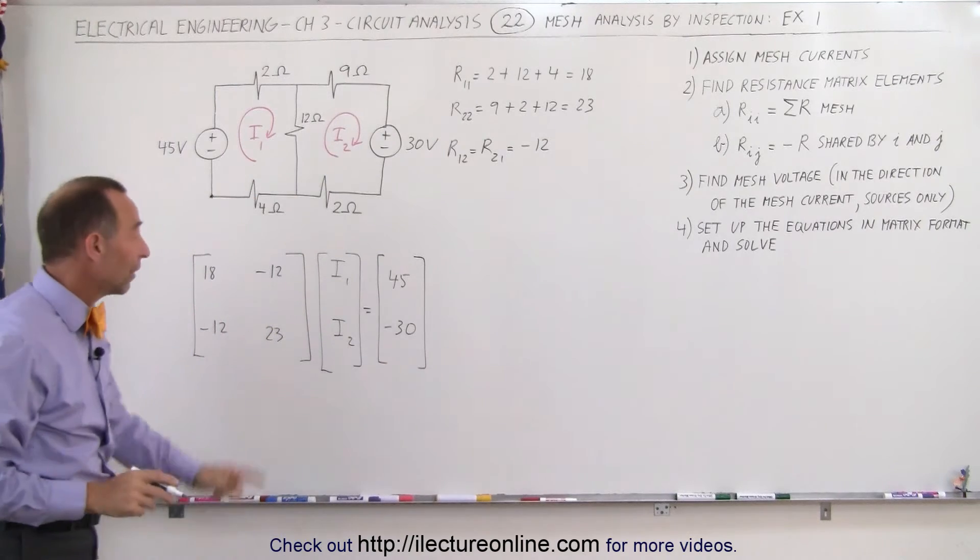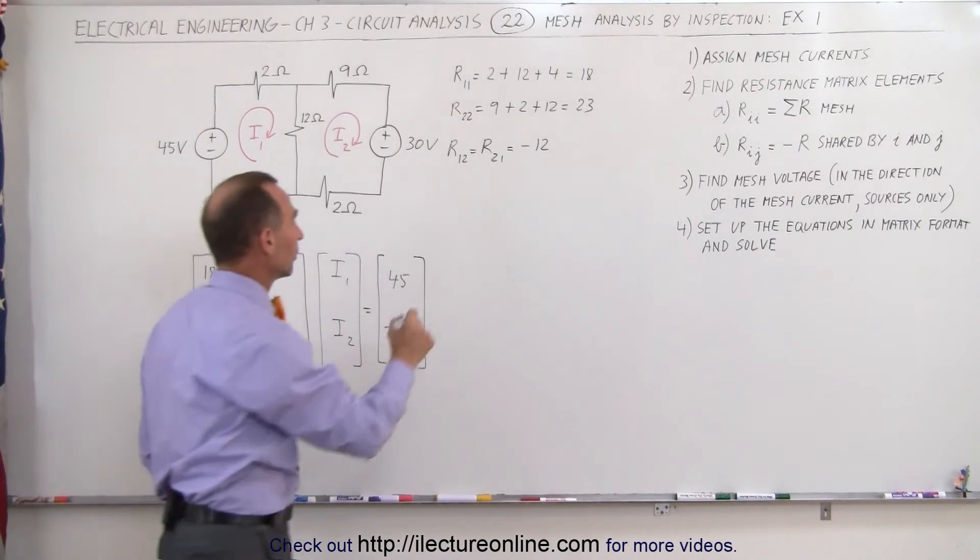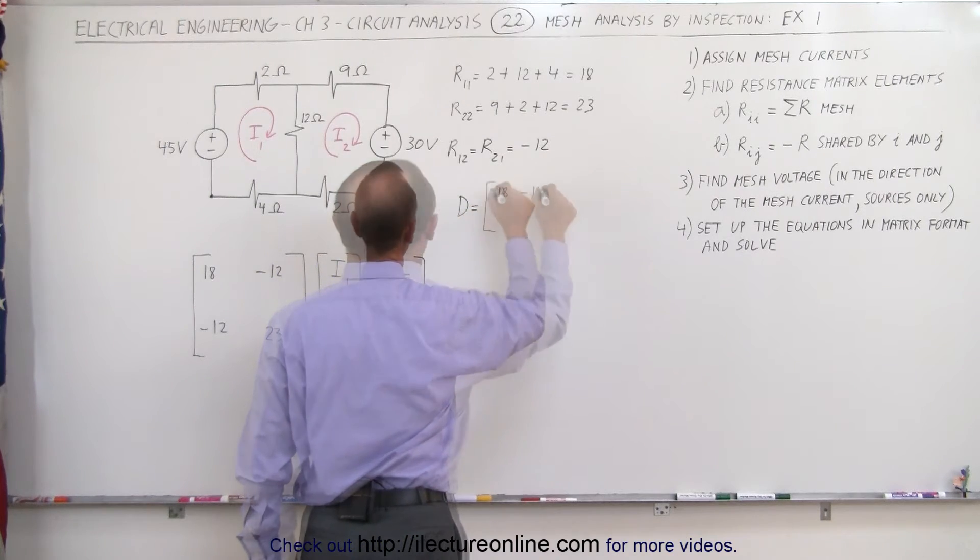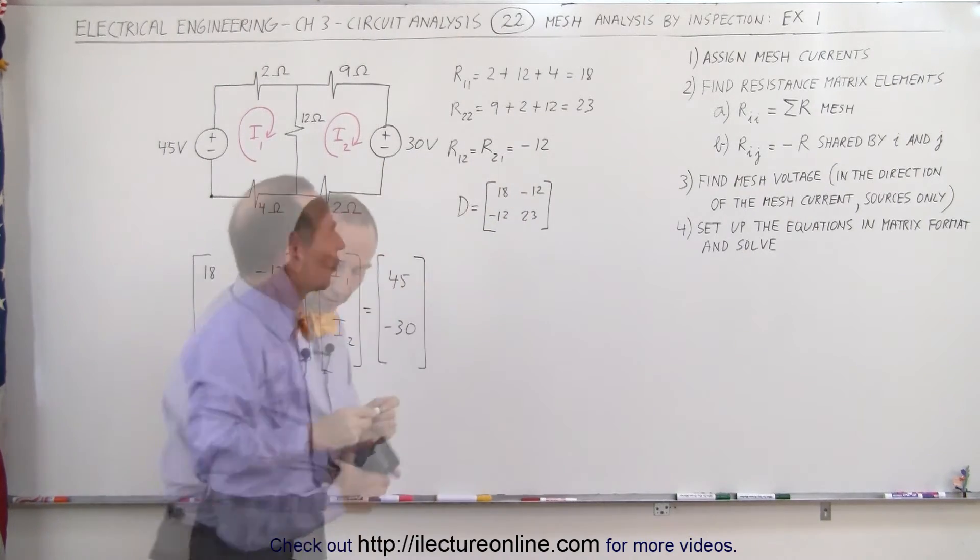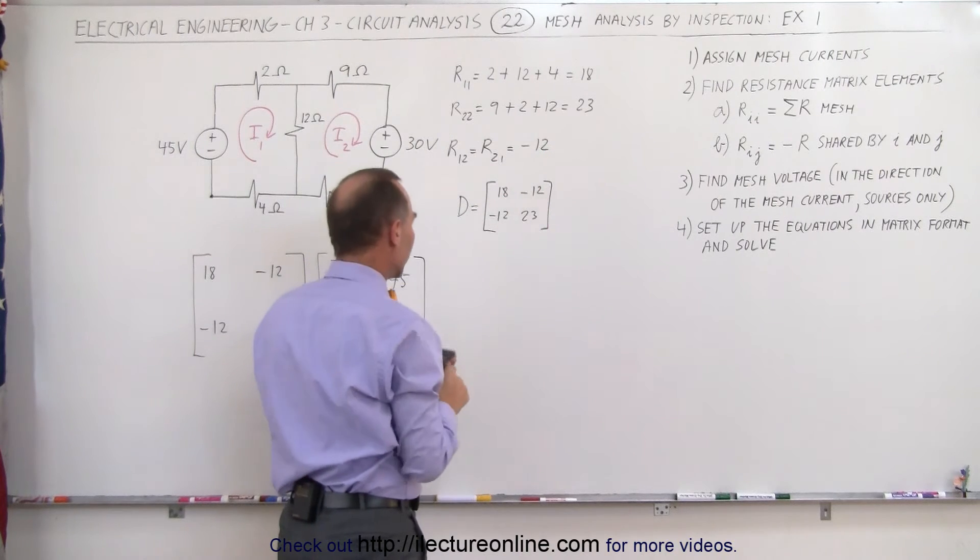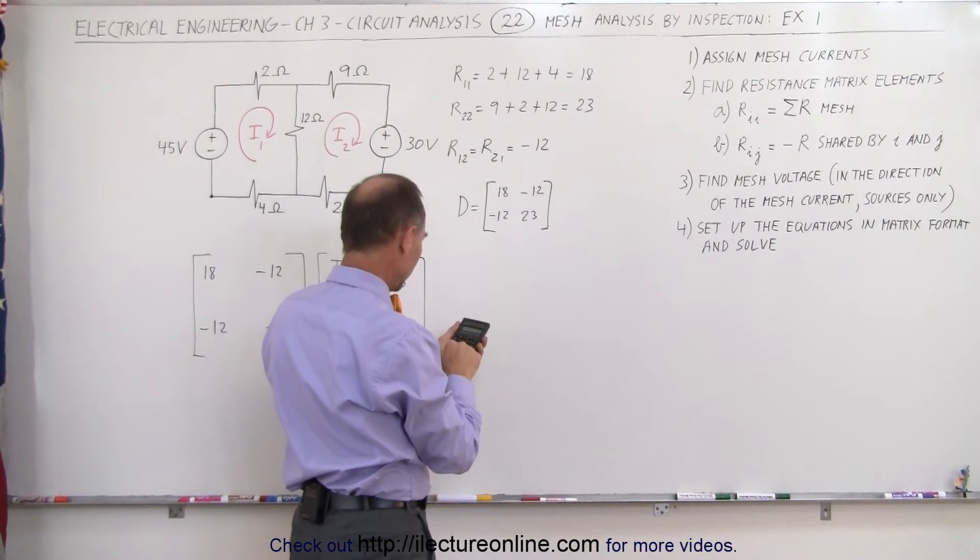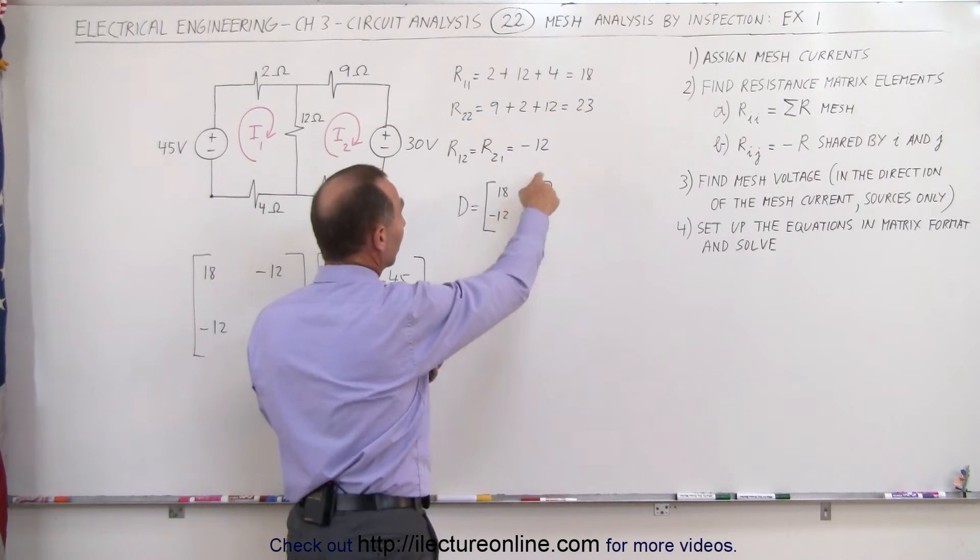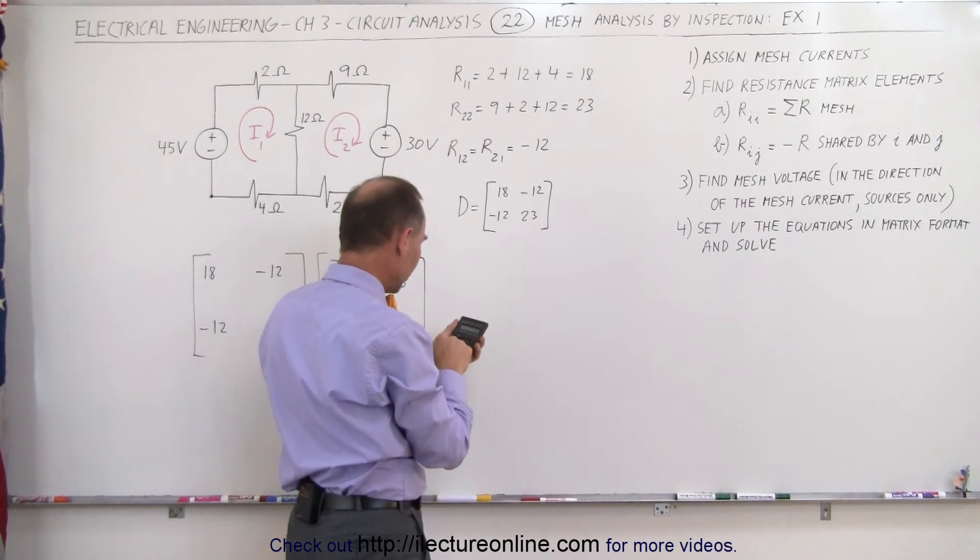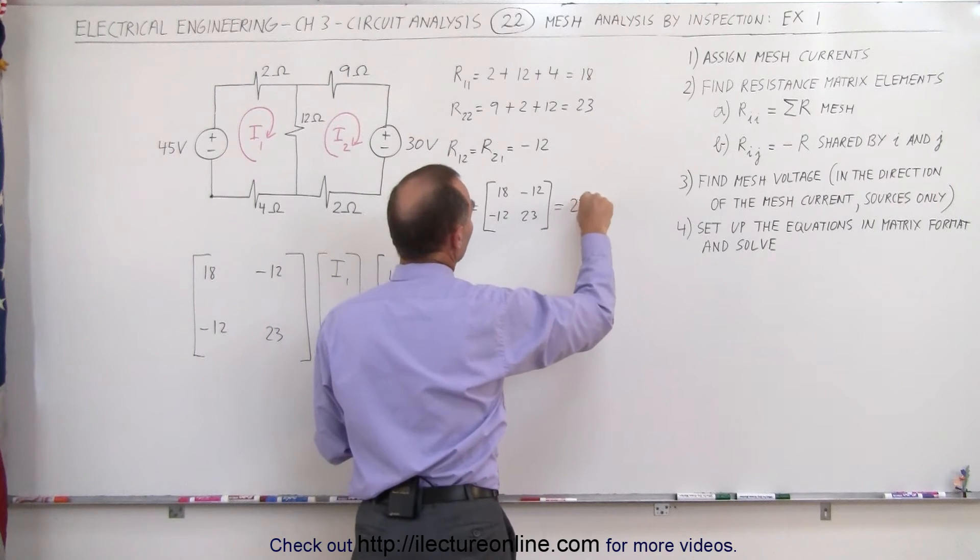We're now ready to solve for I1 and I2. First I want to find the determinant of this matrix, so D is equal to—to find the determinant you multiply these two elements and you subtract the multiplication of those two elements. 18 times 23, and then we subtract the product of those two, which is minus 144, and we get 270 for the determinant.